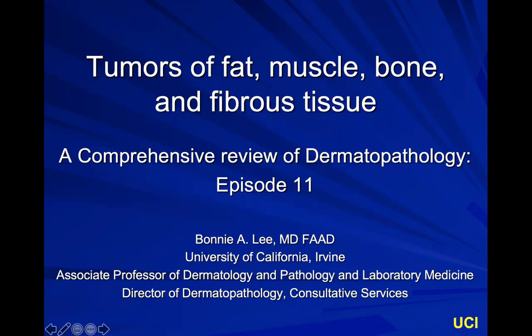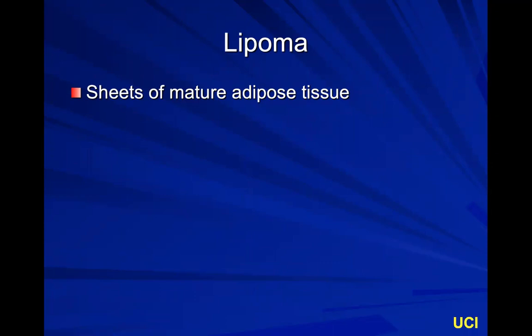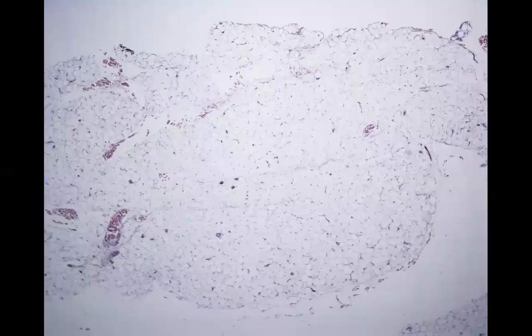Welcome to episode 11 of a comprehensive review of dermatopathology. Today we're going to cover tumors of fat, muscle, bone, and fibrous tissue. We've got a lot to go over. One of the main things when dealing with neoplasms is identifying which cell type you're dealing with, so today we'll go over a few of these spindled cells to see how we can distinguish them. We'll start with fat.